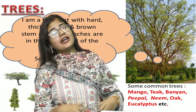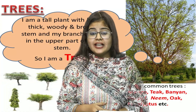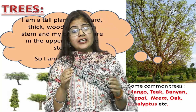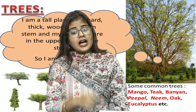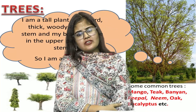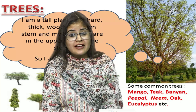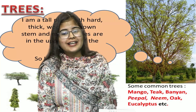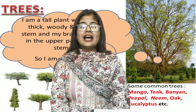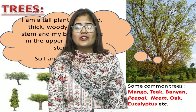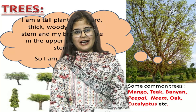The third classification is trees. Trees are very long, they have a thick woody stem, and their branches are in the upper part of the stem. Shrubs also have branches, but in shrubs the branches arise from the base of the plant.